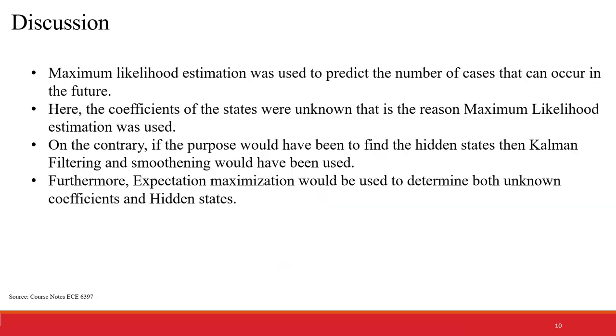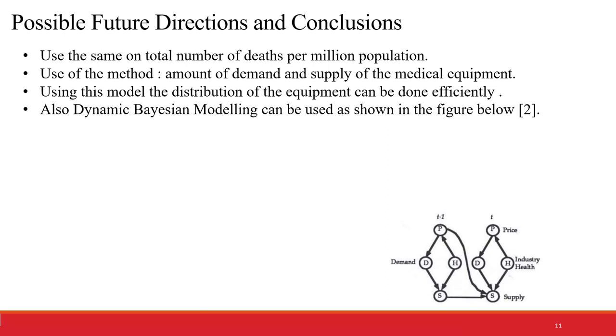Maximum likelihood estimation was used to predict the number of cases that can occur in the future. Here, the coefficients of the states are unknown, and that is the reason maximum likelihood estimation was used. On the contrary, if the purpose would have been to find the hidden states, then Kalman filtering and smoothing would have been used. Furthermore, expectation maximization would have been used to determine both the unknown coefficients and the hidden states.